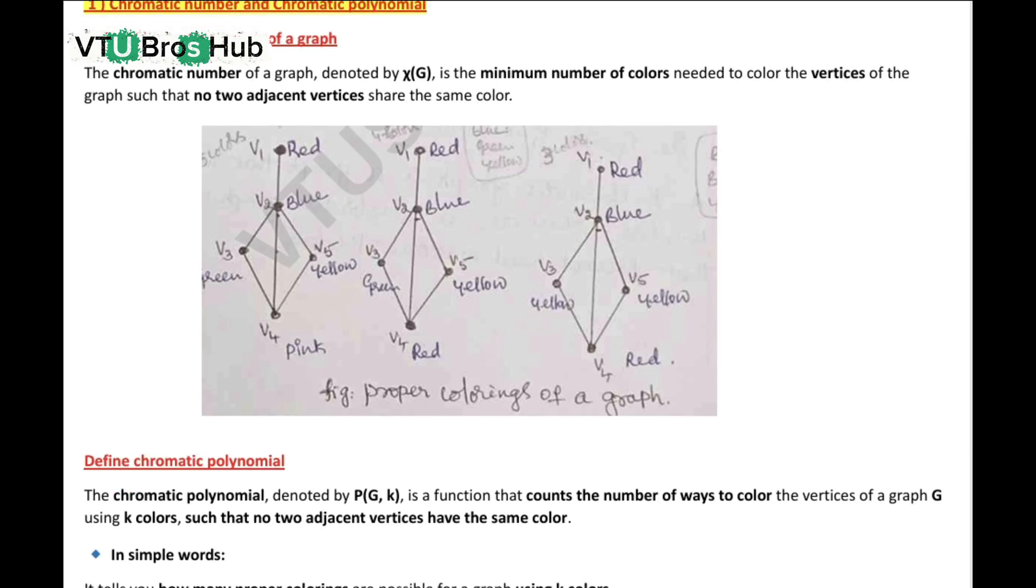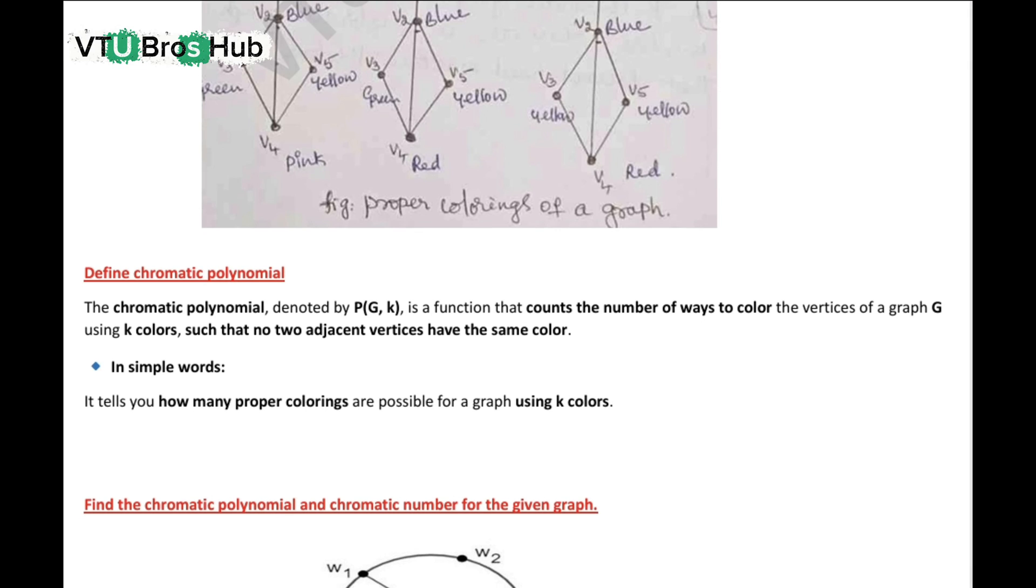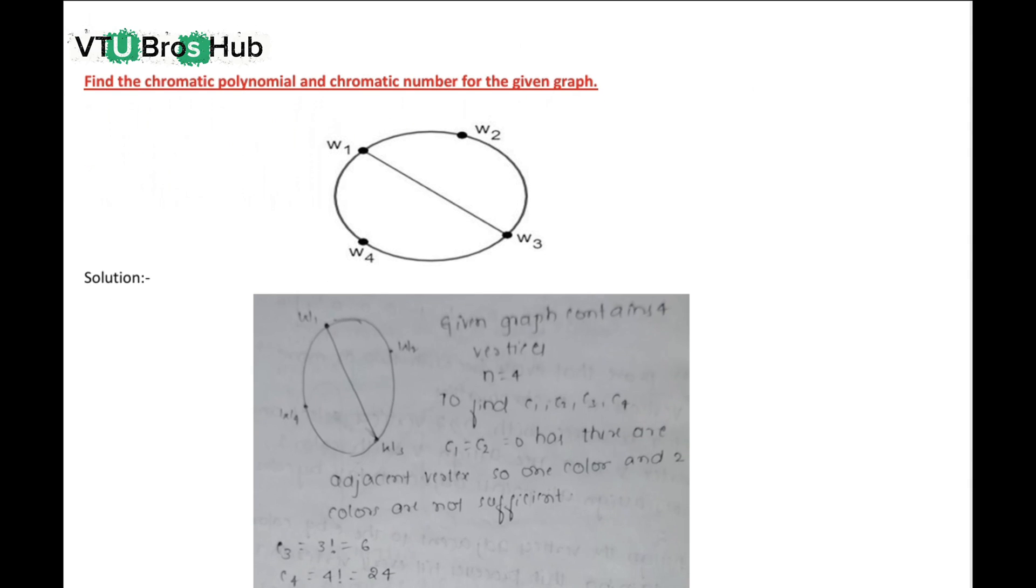Next, what is the chromatic polynomial? It counts how many ways we can color the graph using K colors, such that adjacent vertices don't get the same color. Now refer to the graph shown in the PDF. The chromatic number and polynomial are calculated.